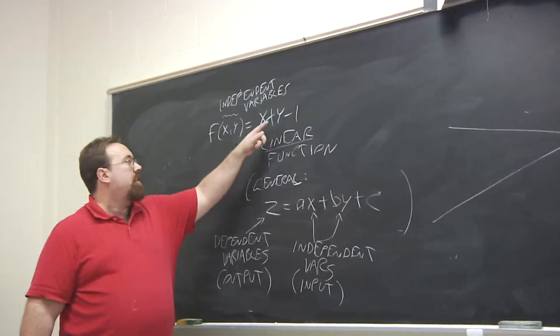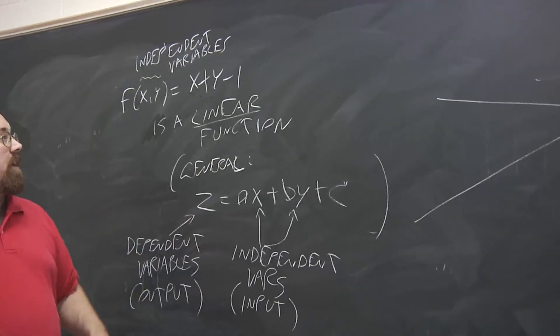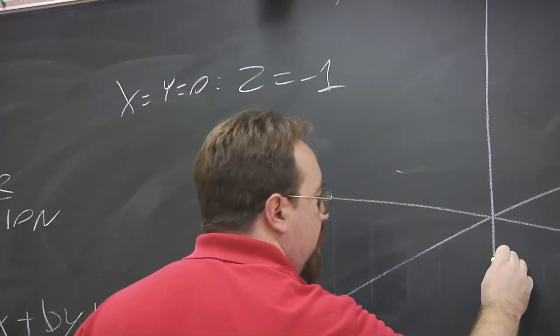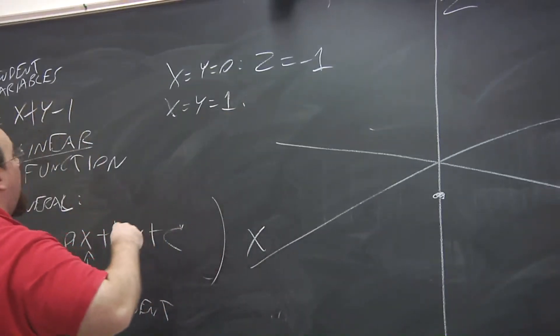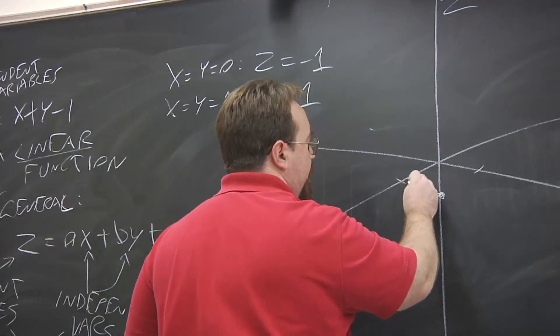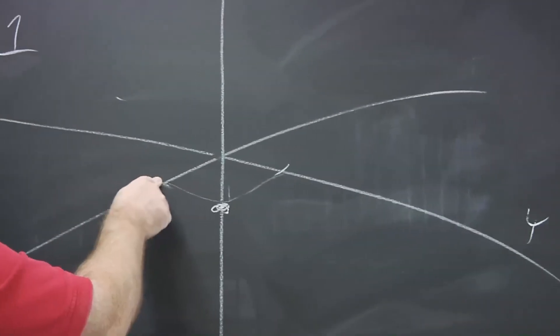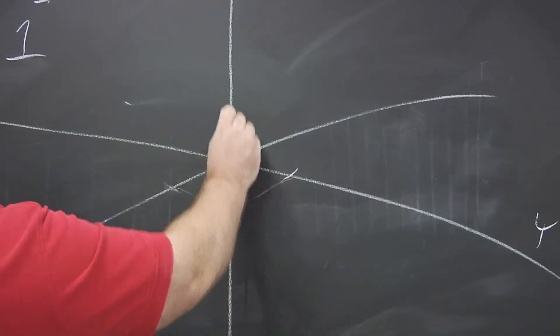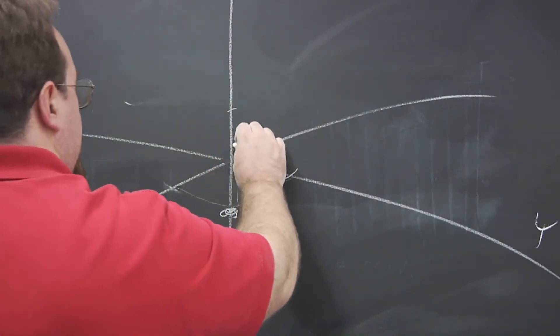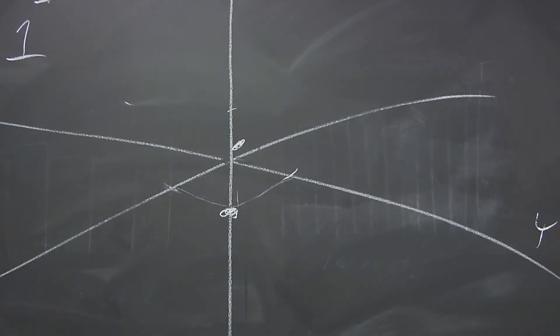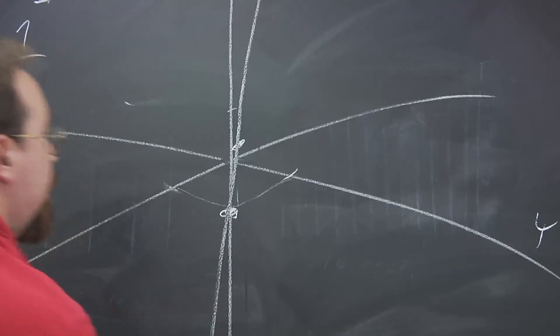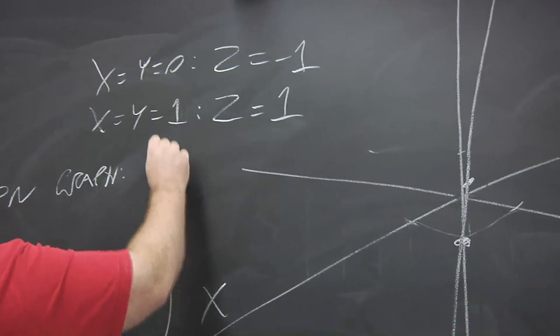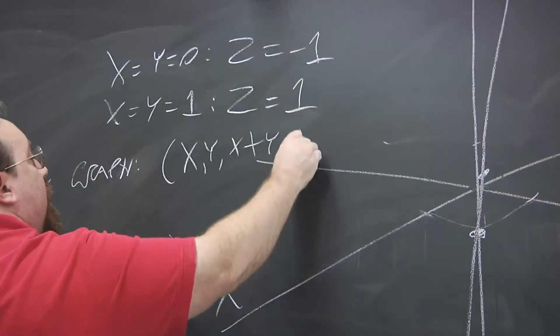If you have a linear function like this, its graph is predictable: it's going to be a plane. So of course a plane, any plane, is uniquely determined by only two points. So for instance, if we let x and y be equal to zero, then our z value is going to be minus one. So this is one point on the plane. On the other hand, if we let x and y both be equal to one, then z is equal to one. So I go one unit along x, one unit along y, and then one unit up. So this point is going to be right here. Again, it's kind of difficult to see 3D projected onto 2D, but this is going to be the plane that passes through those two points. So that is going to be the graph of that function.